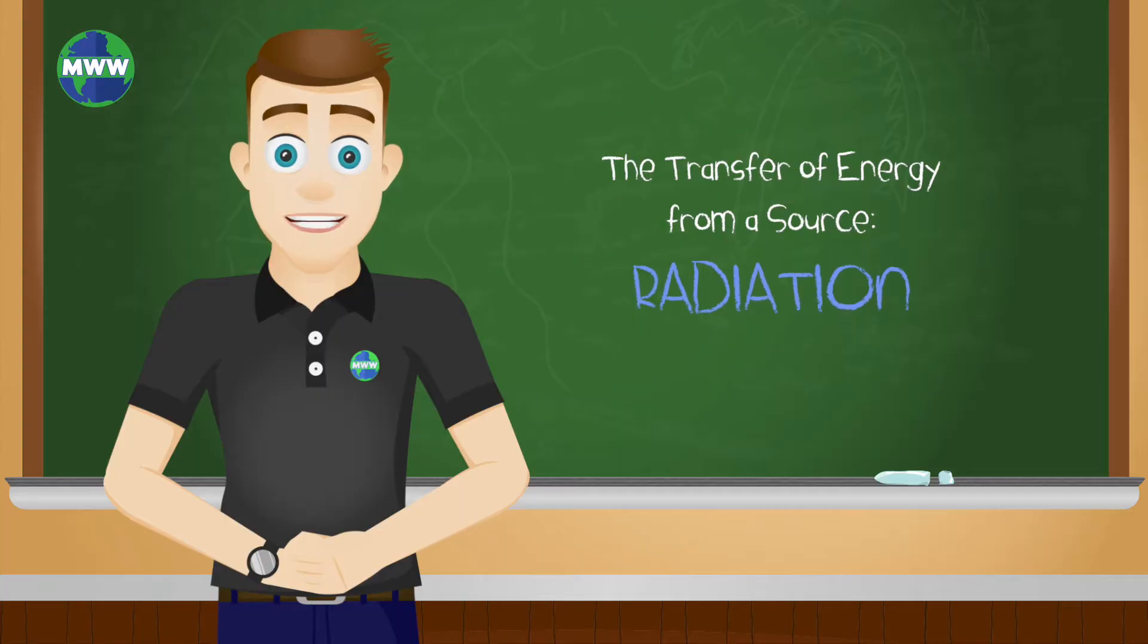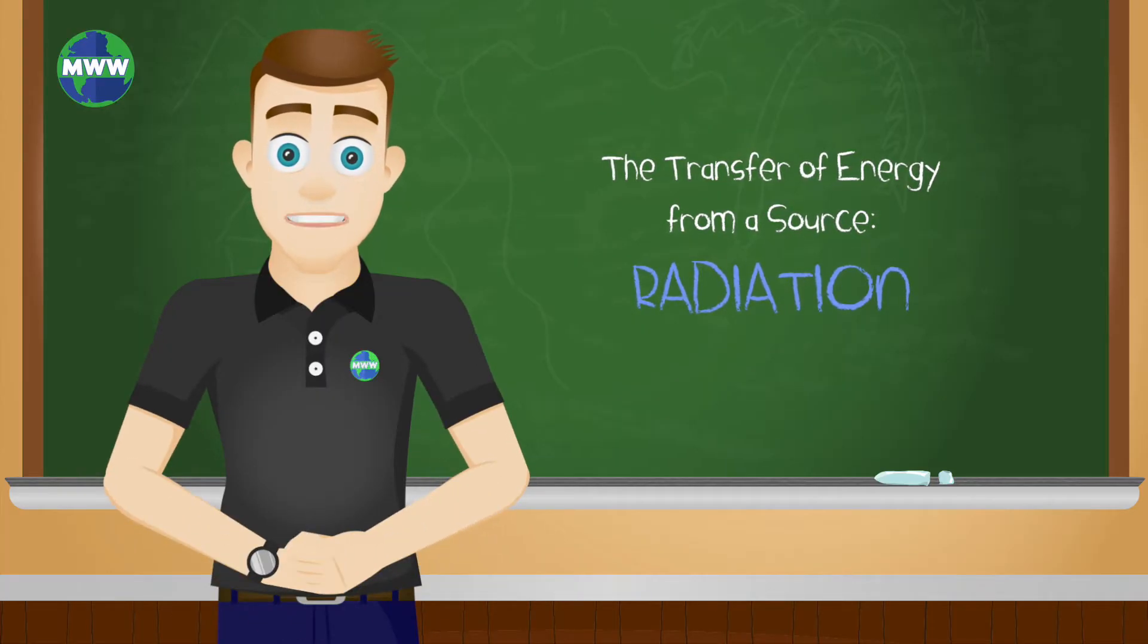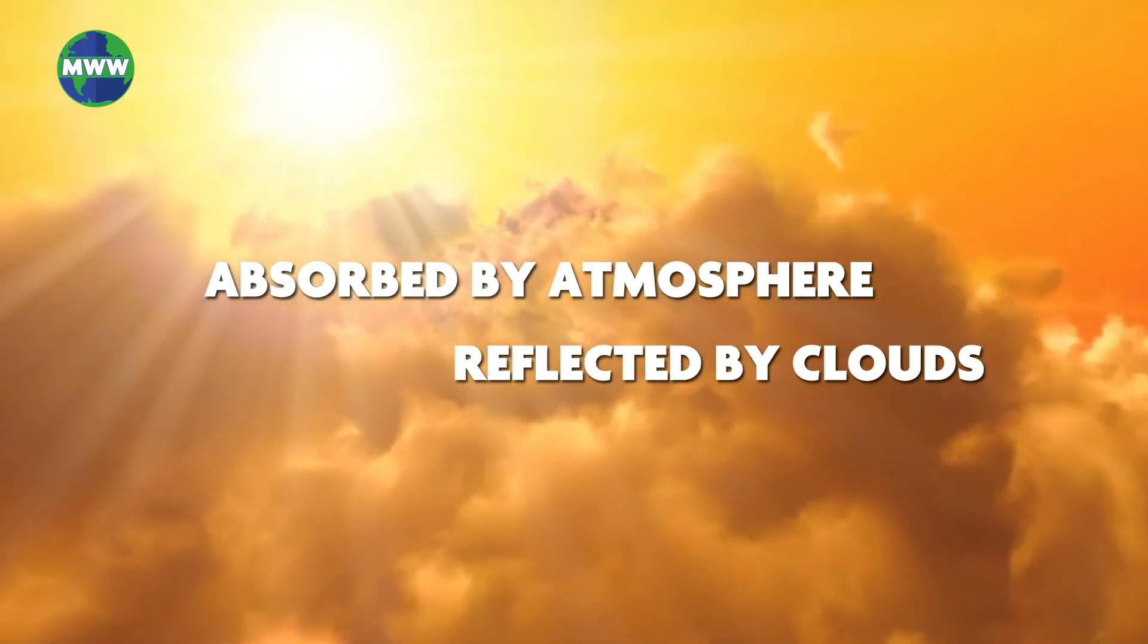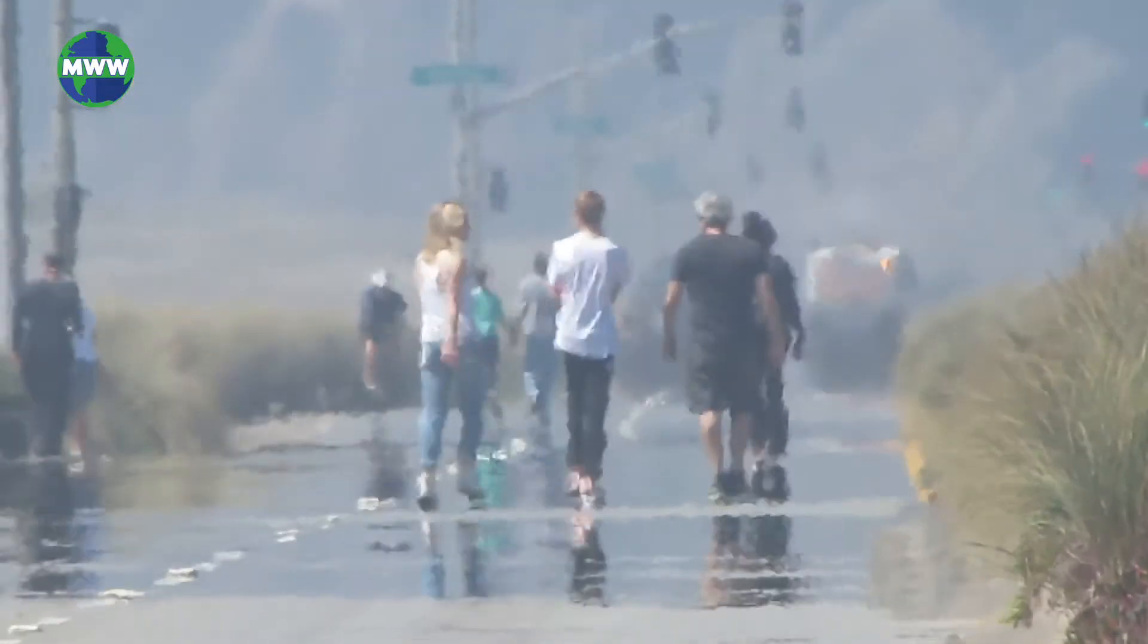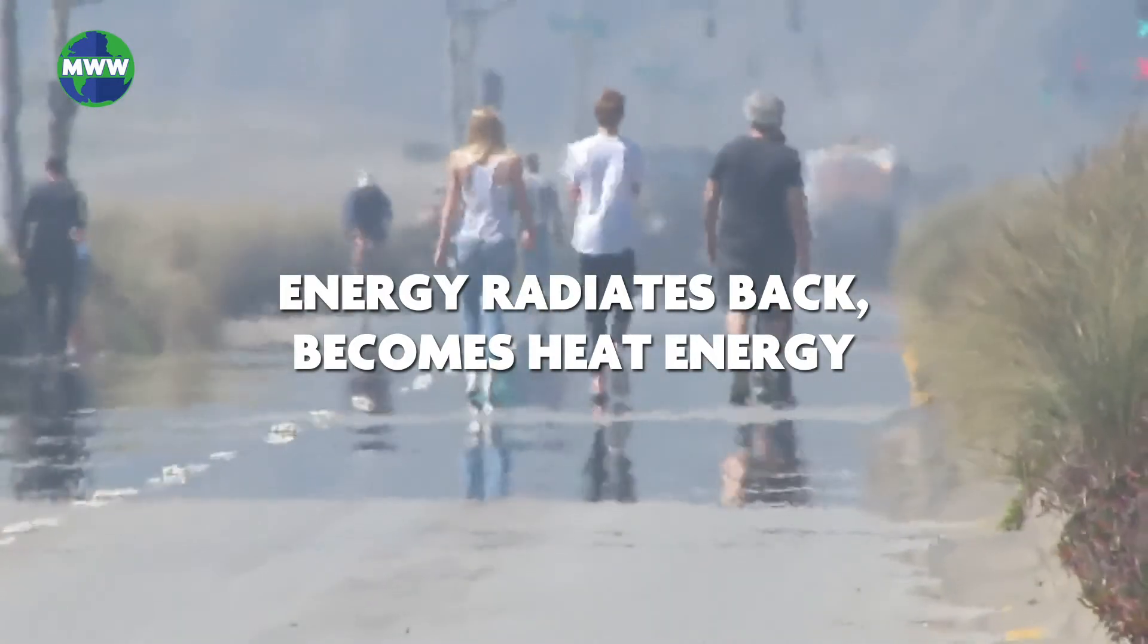The first way heat is transferred in the atmosphere is through radiation, or the transfer of energy from a source such as the Sun. Most solar radiation gets absorbed by the atmosphere or reflected by the clouds. The radiation that reaches the Earth's surface bounces back into the atmosphere, becoming heat energy or infrared radiation.